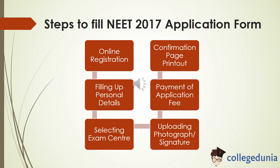Here are the steps to fill the NEET 2017 application form. First, you have to register online on the official website. Then you will get a password and a registration number. Then you have to fill up personal details like name, date of birth, etc. Filling the exam center is an important point — you should select an exam center near your house so it is convenient to reach on time. The next step is to upload your photograph and signature. After all this, you have to pay the application fees, then take a printout of the confirmation page.